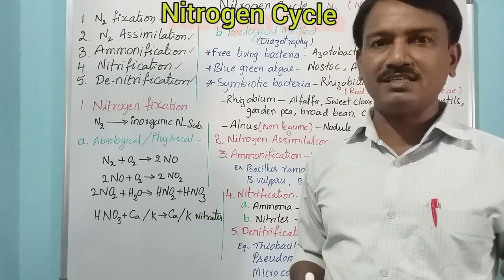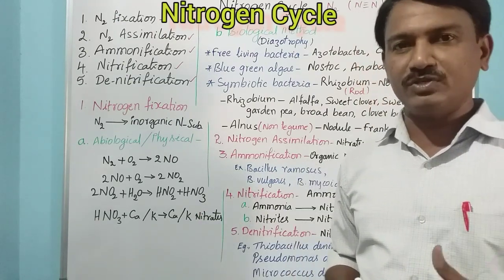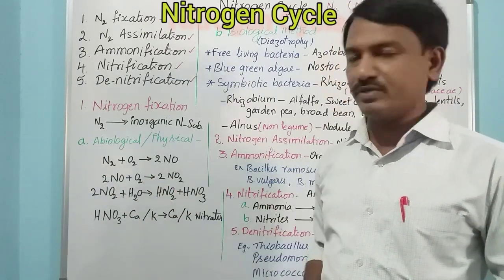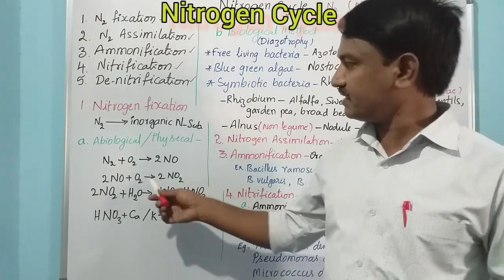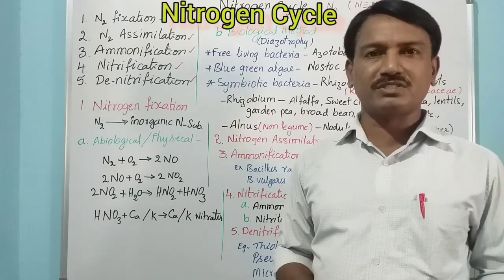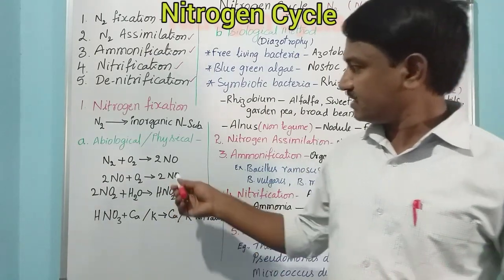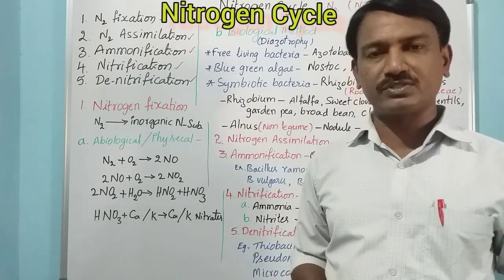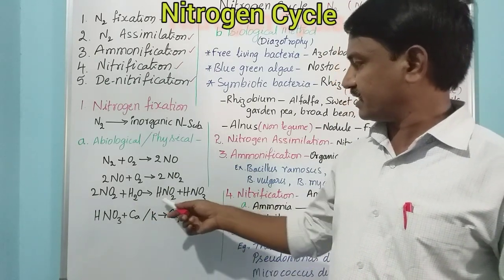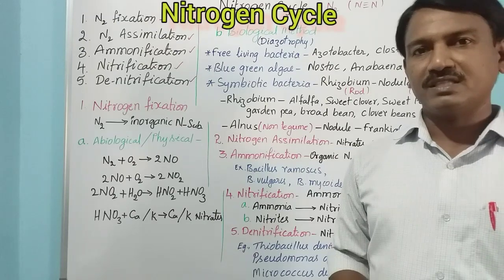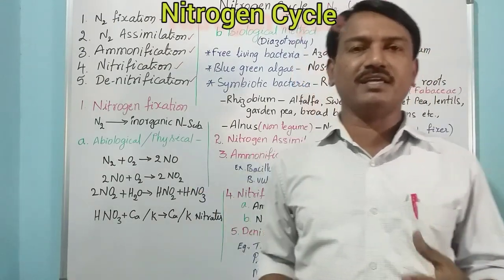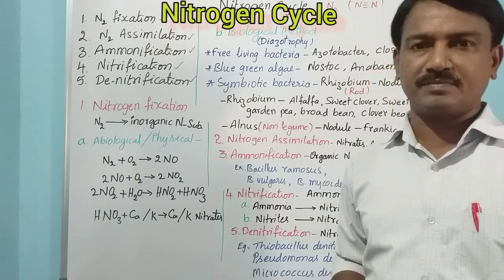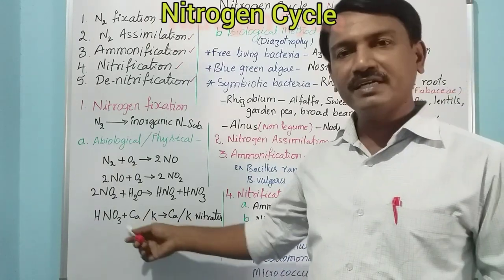In the physical method, during the rainy season, thunders and lightnings are formed. At that time, nitrogen combines with oxygen to form 2NO (nitric oxide). This reacts with oxygen again to form nitrogen dioxide, 2NO₂. Then 3NO₂ reacts with water molecules to form nitrous acid (HNO₂) and nitric acid (HNO₃). These HNO₂ and HNO₃ reach the soil.